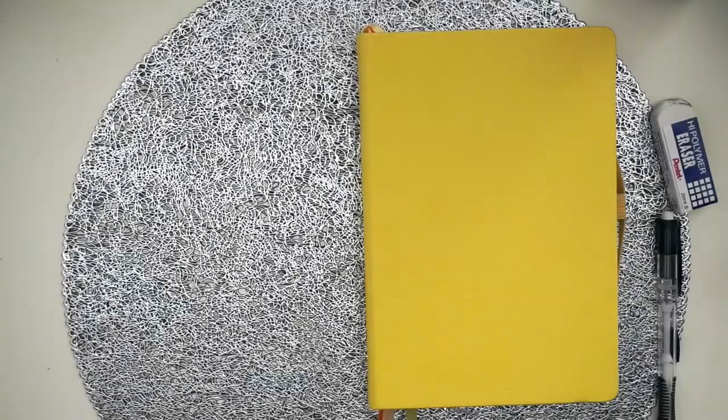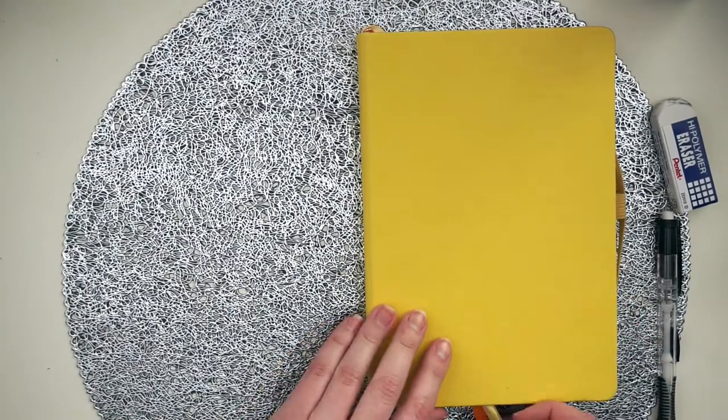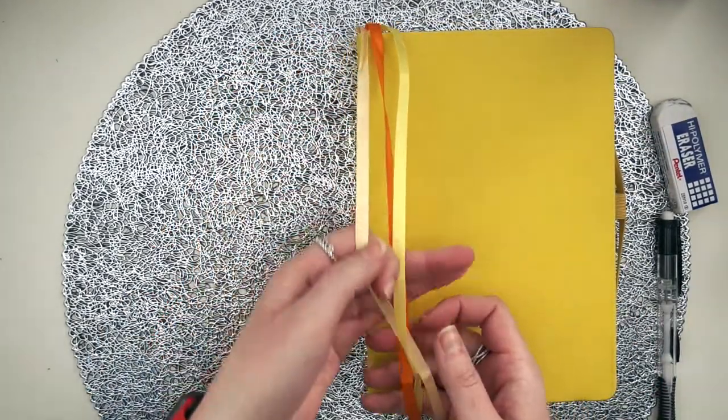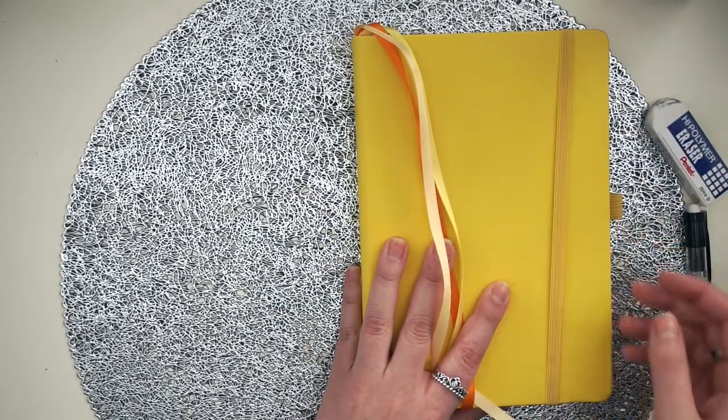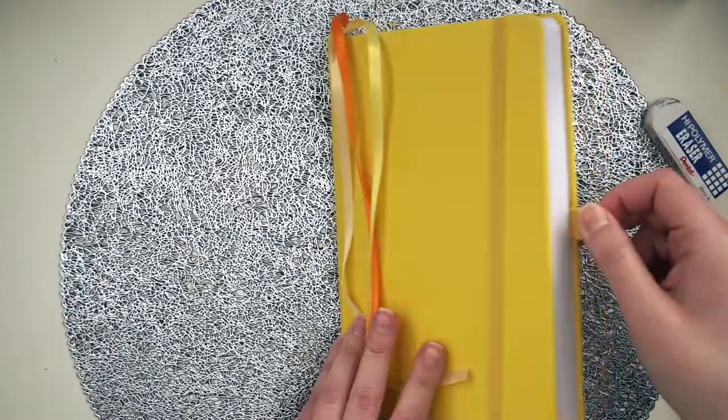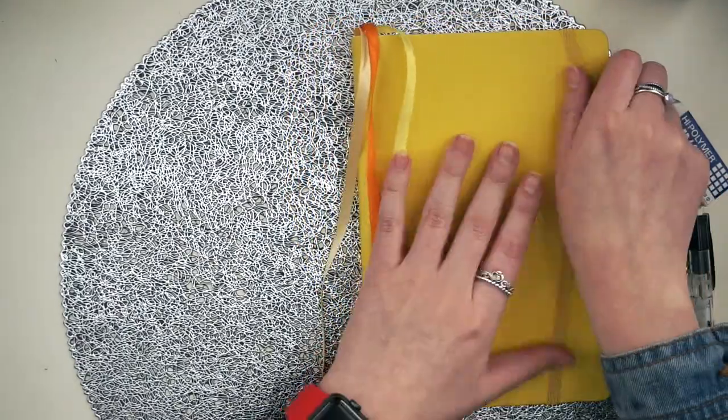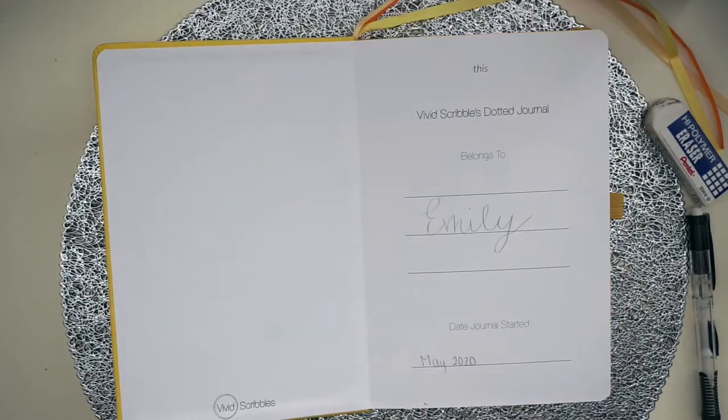That journal is going to be the Vivid Scribbles A5 dotted notebook and I like this so far. I got it off Amazon and I love the bright yellow color. In the beginning of the video, I do a little flip through of this. This is the yellow Vivid Scribbles dotted journal. It has three bookmarks, an elastic band, and finally a pen loop.